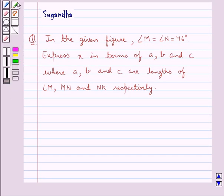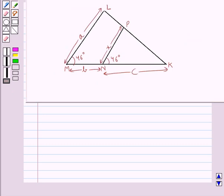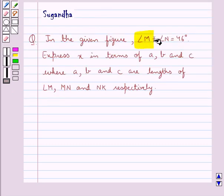Hello and welcome to the session. In this session we discuss the following question which says, in the given figure, angle M is equal to angle N is equal to 46 degrees.